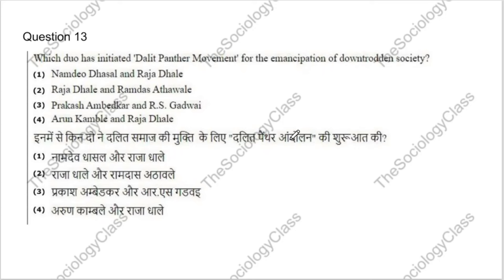Question 13: Which duo initiated the Dalit Panther Movement for the emancipation of downtrodden society? Options: Namdeo Dhasal and Raja Dhale; Raja Dhale and Ram Desh Athavale; Prakash Ambedkar and R.S. Gadwai; or Arun Kamble and Raja Dhale. The correct answer is A — Namdeo Dhasal and Raja Dhale are associated with the Dalit Panther Movement. Students appearing for the exam should read about this topic.